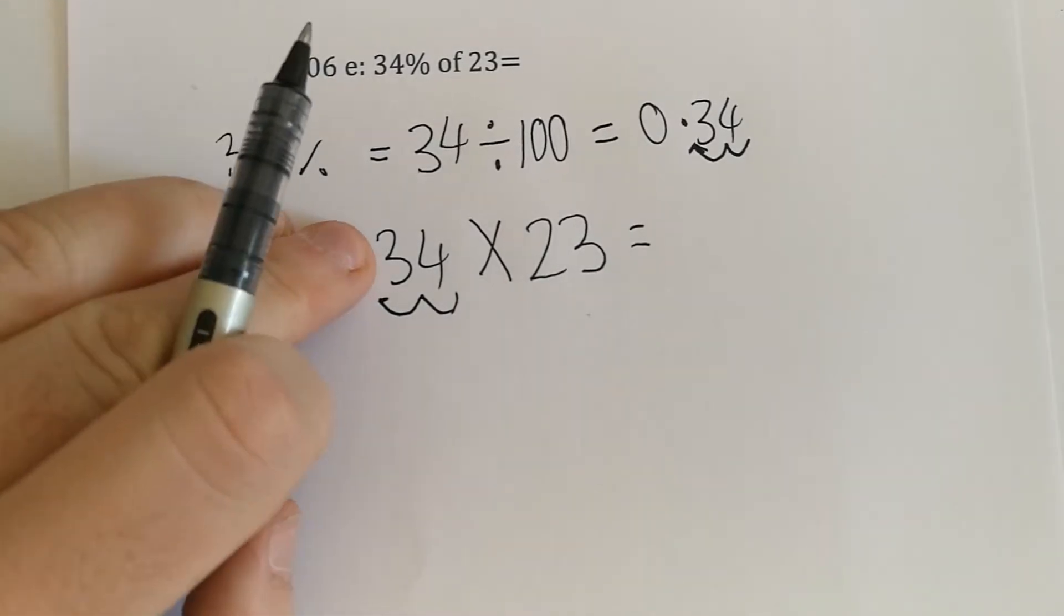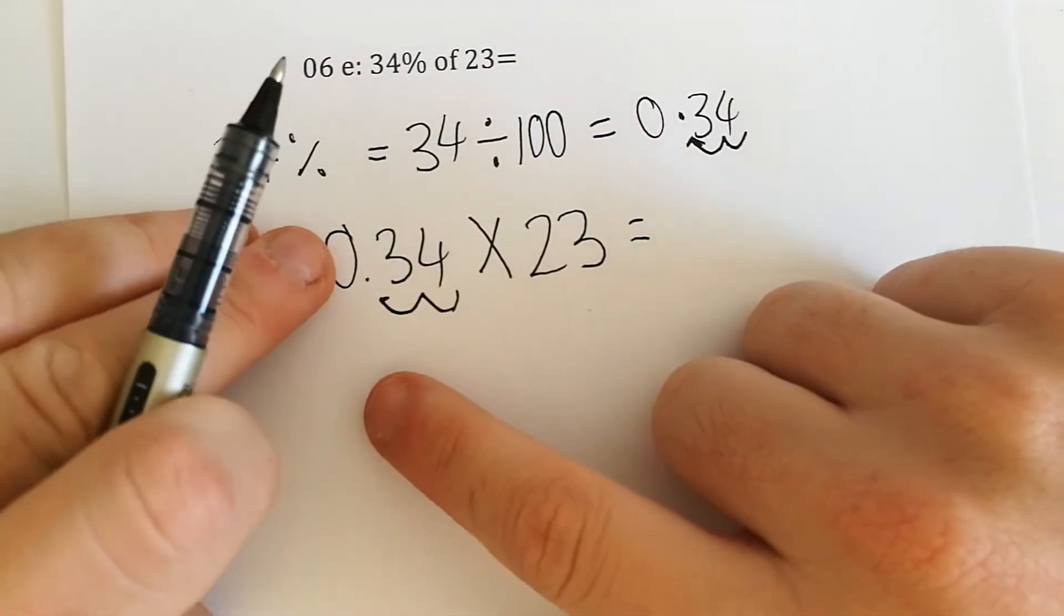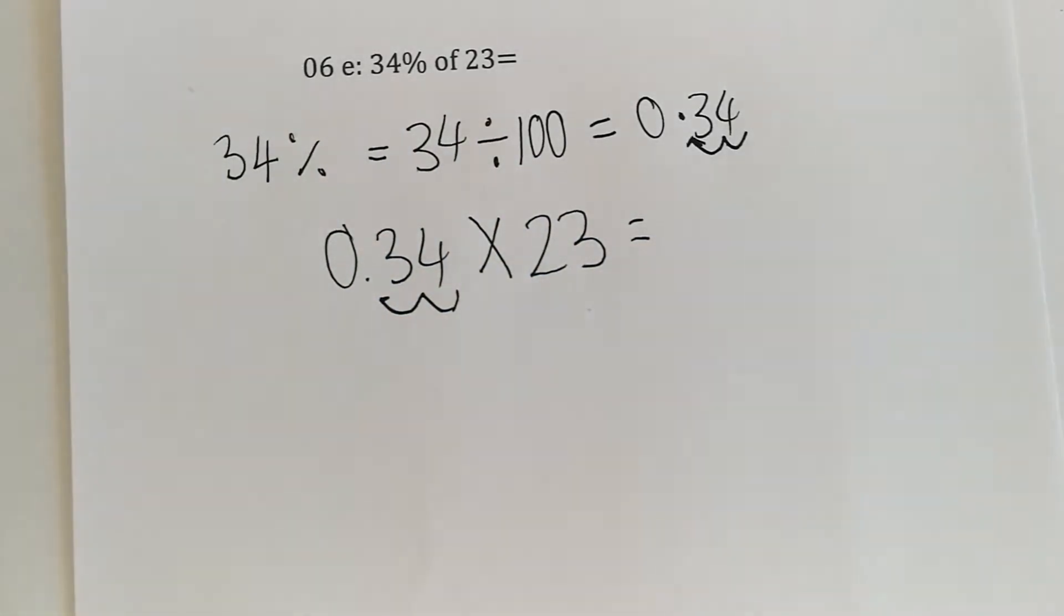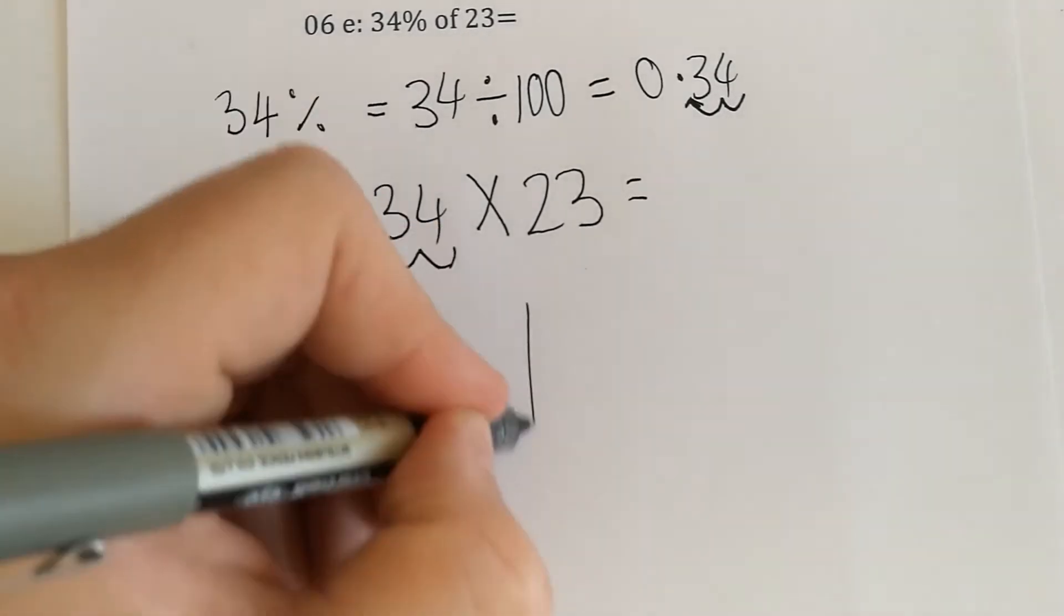If we had 34, the decimal point would be at the end, but we've got to move it twice for our final answer. Let's line it up—we'll use a multiplication grid.